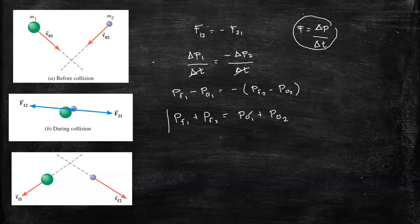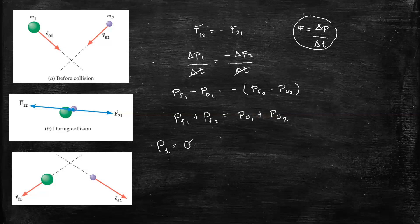This result is our law of conservation of momentum: the final momentum after the collision is equal to the initial momentum before the collision. Thus, the total momentum is conserved — it remains constant — if and only if the summation of external forces exerted by the environment on our system is equal to zero.